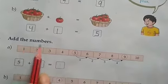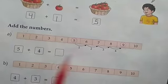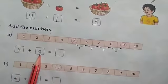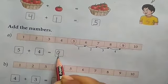Number 2: Add the numbers. Here given the numbers 1 to 10. 5 plus 4 equals 9.